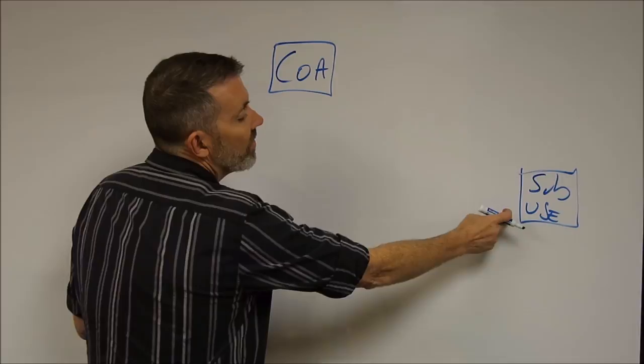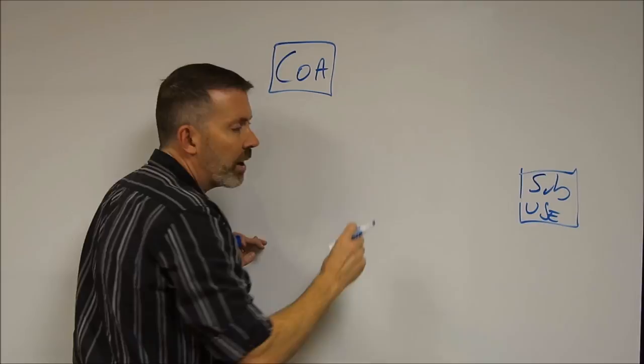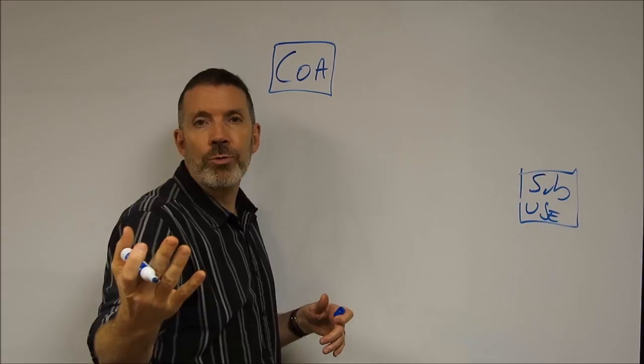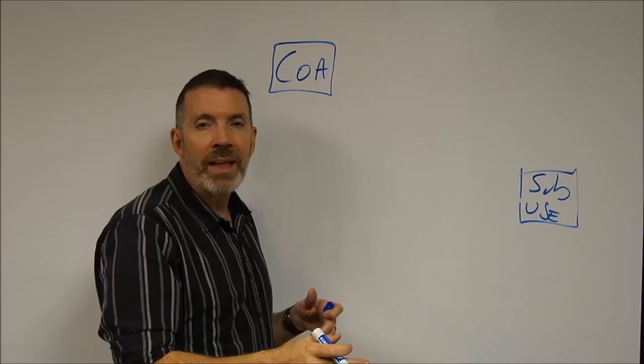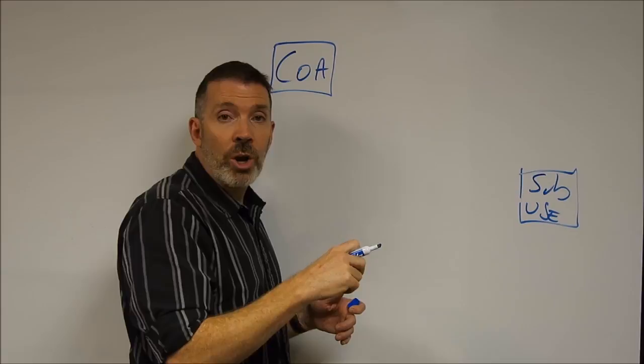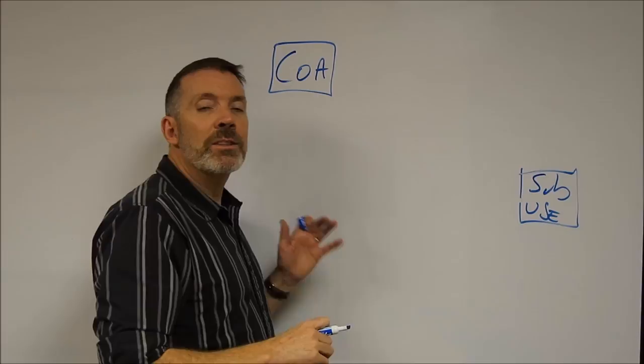Notice both of these are in rectangles. The notation that we're going to use in path diagrams is we're going to use a square or a rectangle for any variable that we observe directly. If there's a column in your data file that has numerical values on that measure, that's called a manifest variable or an observed variable and we denote it with a square. When we get to latent factors in later episodes we're going to denote those with a circle. In the path model they're all manifest variables, so those are squares.